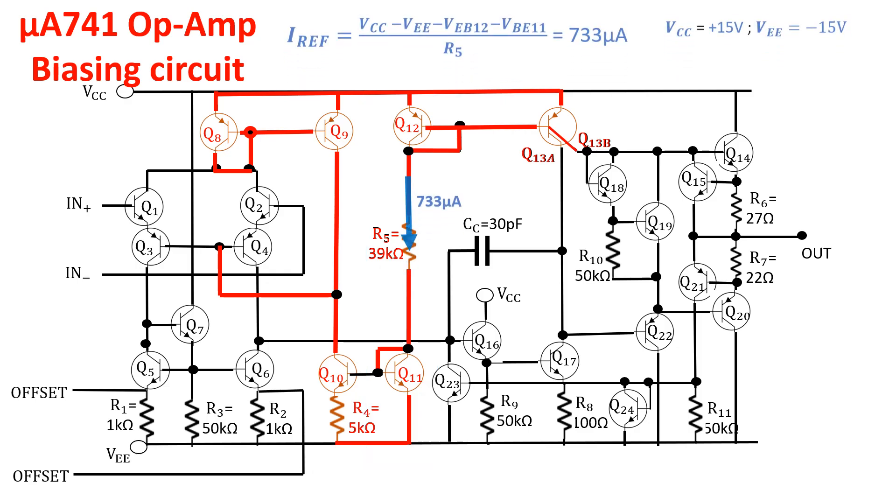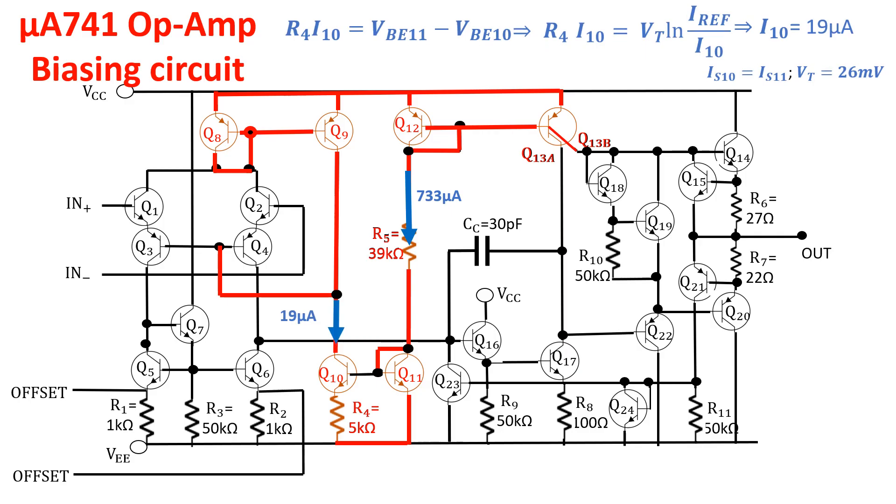So, the current here is equal to 733 microamps, assuming VCC plus 15V and VE negative 15V. The reference current is then mirrored towards the first stage by this Widlar current mirror consisting of Q11, Q10 and R4. The current flowing in Q10 is calculated solving this equation and it is equal to 19 microamps. I leave in the description a link for a very detailed video about the history and the working of the μA741 operational amplifier.